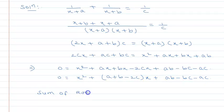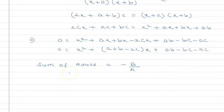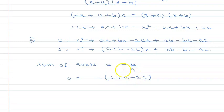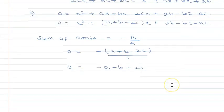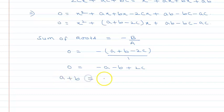...is given by -b/a, where b is the coefficient of x and a is the coefficient of x². The coefficient of x² is 1, so sum of roots = -(a + b - 2c) = 0, which gives -a - b + 2c = 0, so a + b = 2c.